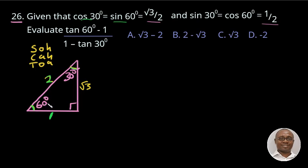That is opposite which is √3 over the adjacent which is 1. √3 over 1, which is just √3, there is no need to write the 1. Then minus 1.